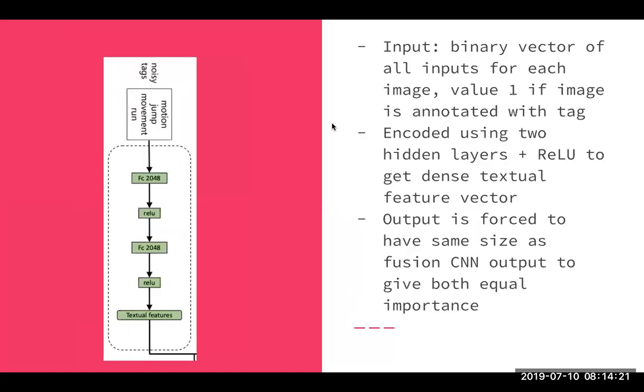Maybe somewhat abstract or difficult, but this is the way they do it. And the main thing is that they use that this way, they can use the bottom layer features in from feature information. What you see here is the textual feature learning parts. So that is, let me see this part here on the bottom left there, but it just rotated it 90 degrees. The input here is a binary factor of all inputs of each image with a value of one if the image is annotated with a tag. And this factor is encoded using two hidden layers and aurelio to get a dense textual feature factor. And the output is then forced to have the same size as the fusion CNN output, so the previous model we described, to give both equal importance. Nothing too weird going on here, just encoding the input using two layers where you force the output to be of a certain size.